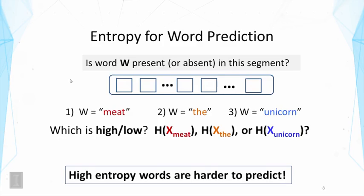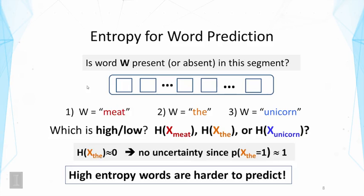So now let's see how we can use entropy for word prediction. Let's think about our problem: to predict whether W is present or absent in this segment. Again, think about the three words, particularly think about their entropy. Now we can assume high entropy words are harder to predict. And so we now have a quantitative way to tell us which word is harder to predict. Now if you look at the three words meat, the, and unicorn again, we clearly would expect meat to have a higher entropy than the or unicorn. In fact, if you look at the entropy of 'the', it's close to 0 because it occurs everywhere. So it's like a completely biased coin. Therefore the entropy is 0.